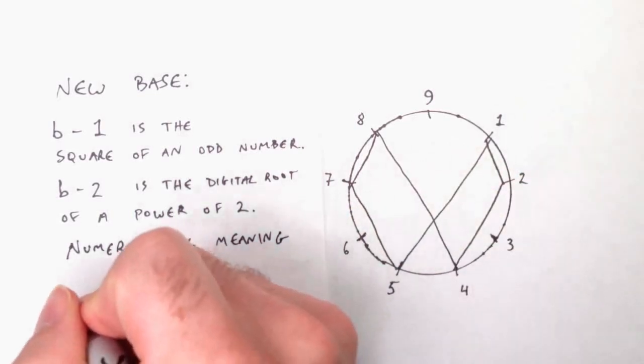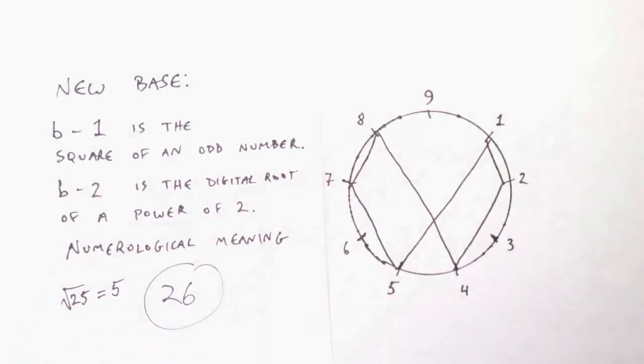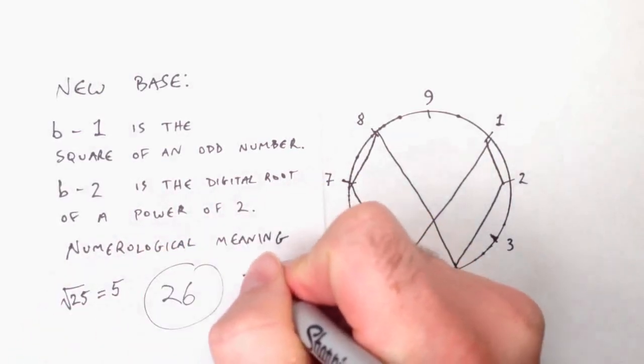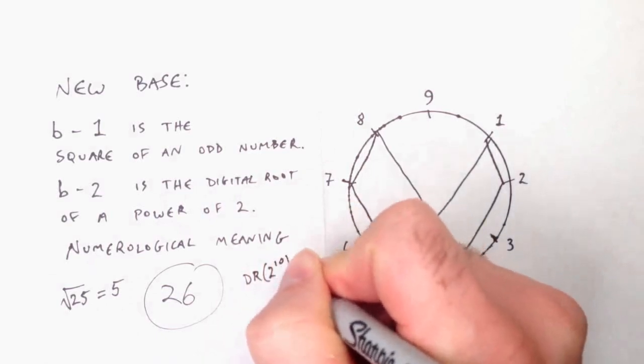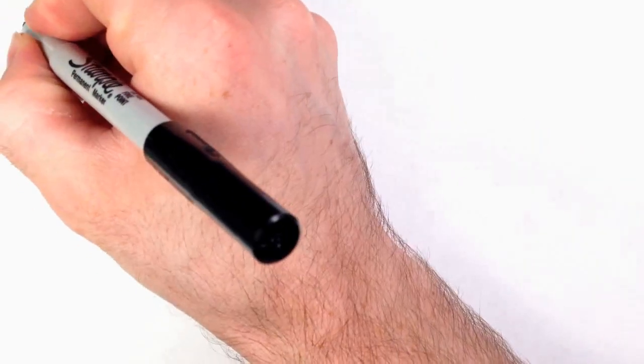The number we're going to use is 26. It follows all the rules. The highest digit would be for the number 25, which is five squared. And believe it or not, in base 26, 24 is the digital root of a power of two. In order to do this, we're going to need to know how to change bases. I'm going to go through that in the next screen. And while you watch that, I want to tell you something.